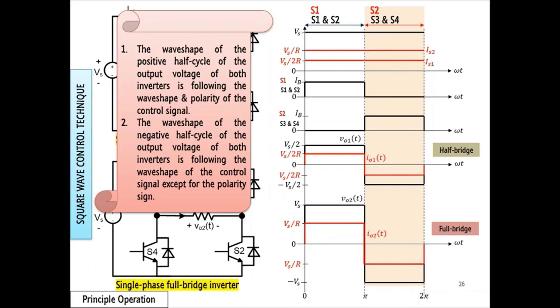On the other hand, the wave shape of the negative half cycle of the output voltage is still following the wave shape of the control signal except for the polarity sign. As a result, the wave shape of the output voltage is square wave.